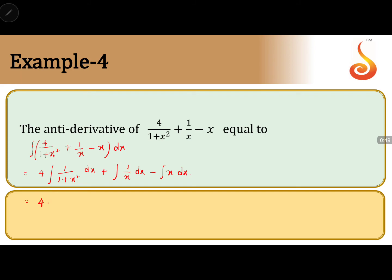The integral of 1/(1 + x²) is tan inverse x. The integral of 1/x is log|x|. And the integral of x is x²/2. So the final answer is 4 tan⁻¹x + log|x| − x²/2 + C.